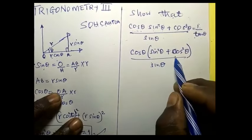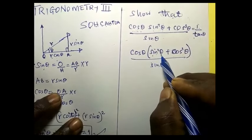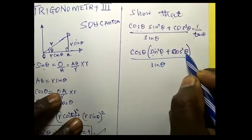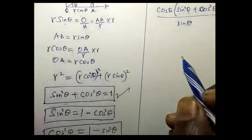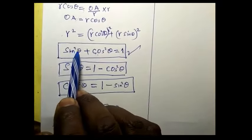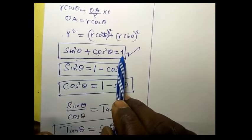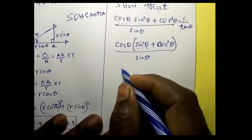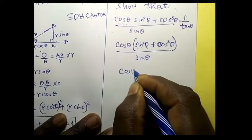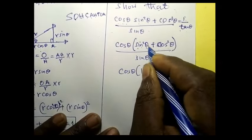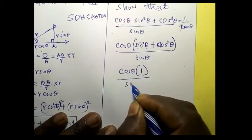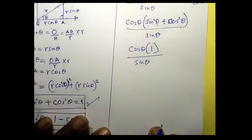But what is this sine square theta plus cos square theta? That's why I told you you must master this. Sine square theta plus cos square theta is equal to 1. So simply we are saying that this one is cos theta into 1, which is 1 divided by sine theta.